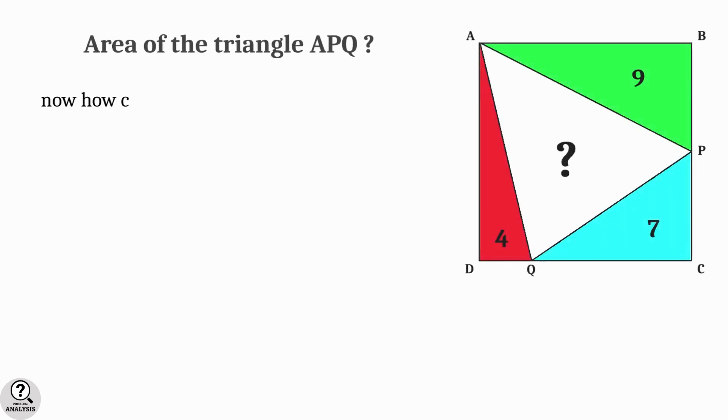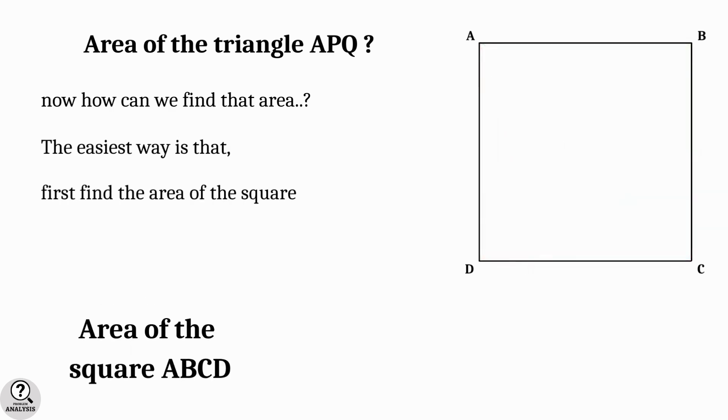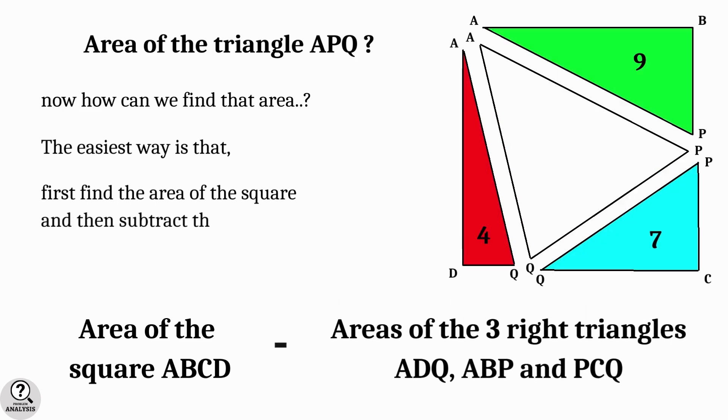Now think about what are the possible ways to find the required area. Since we know the area of right triangles inside the square, the easiest way will be first find the area of the square and then cut out the areas of right triangles. Let's proceed in that way.